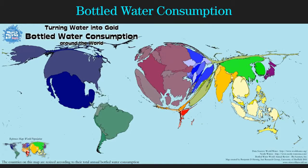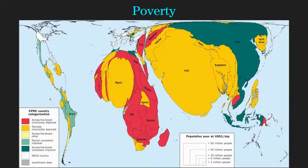Here's one of bottled water consumption. You can see Europe specifically, as well as the entire Western Hemisphere — Mexico, Brazil, the United States — we drink a lot of bottled water. Africa, not so much. Here is one based off of poverty, and you can see the United States is very small, Australia very very small, but most of Africa is quite large here. India quite large, because this is places where poverty is widespread. Europe is almost non-existent here.